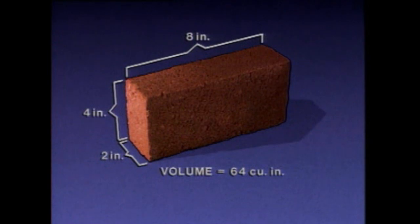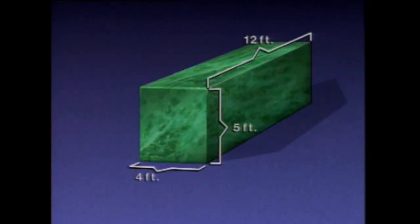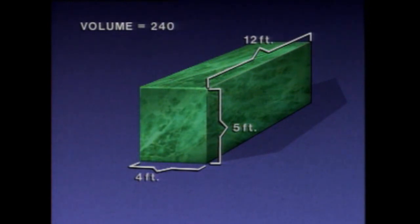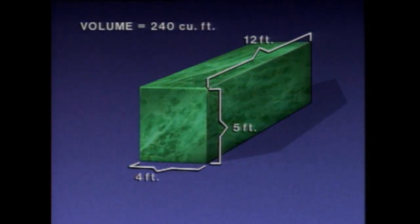Cubic feet and cubic yards are also common units of volume, and are calculated the same way. The volume of this object can be calculated by multiplying four feet times five feet times twelve feet, for a total of 240. Since the three length measurements are all in units of feet, the volume is expressed in cubic feet.